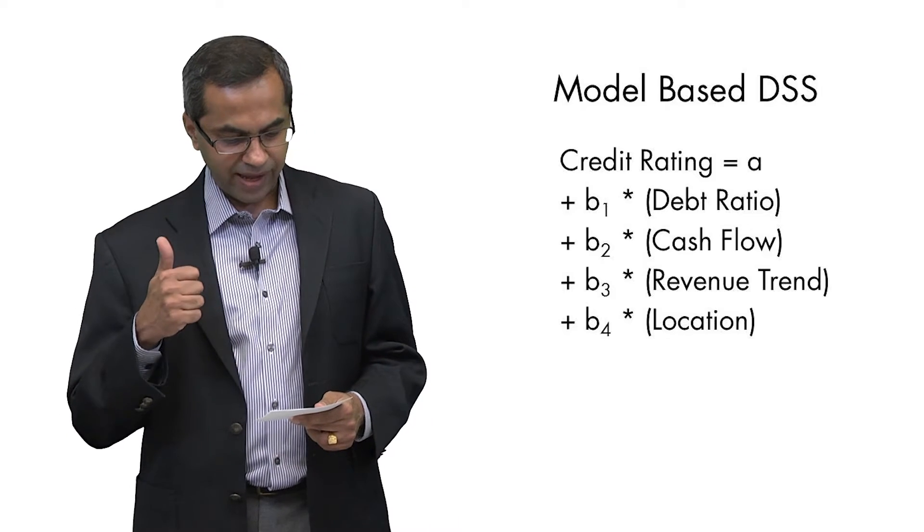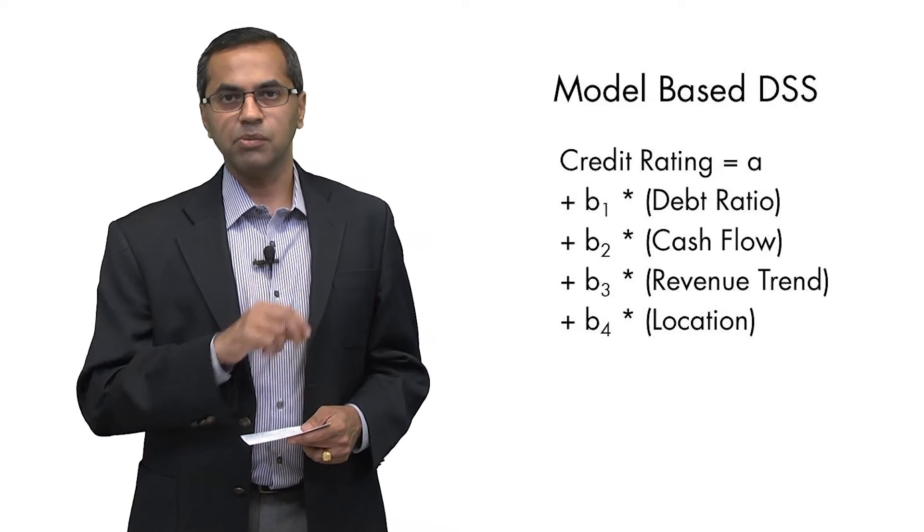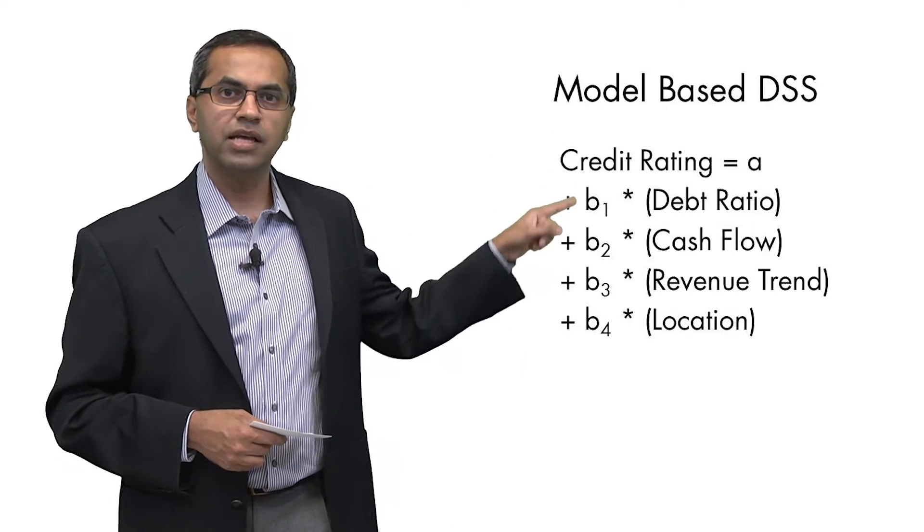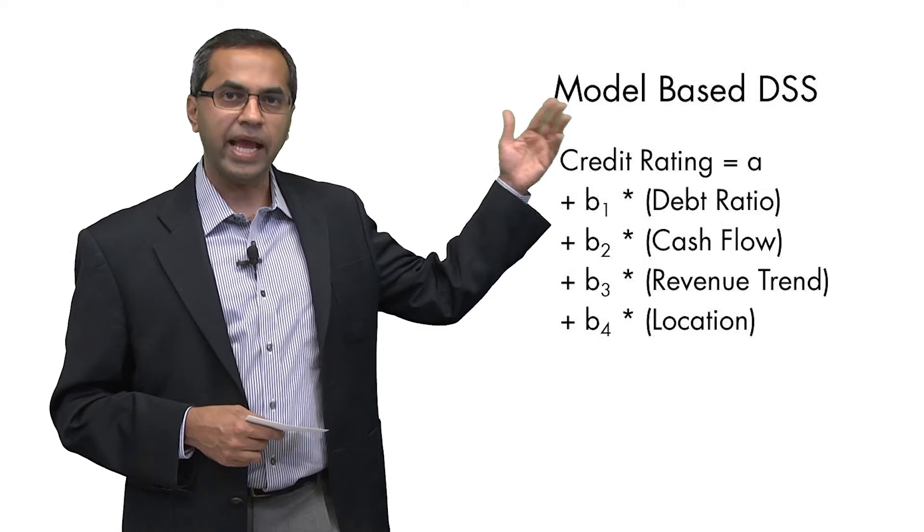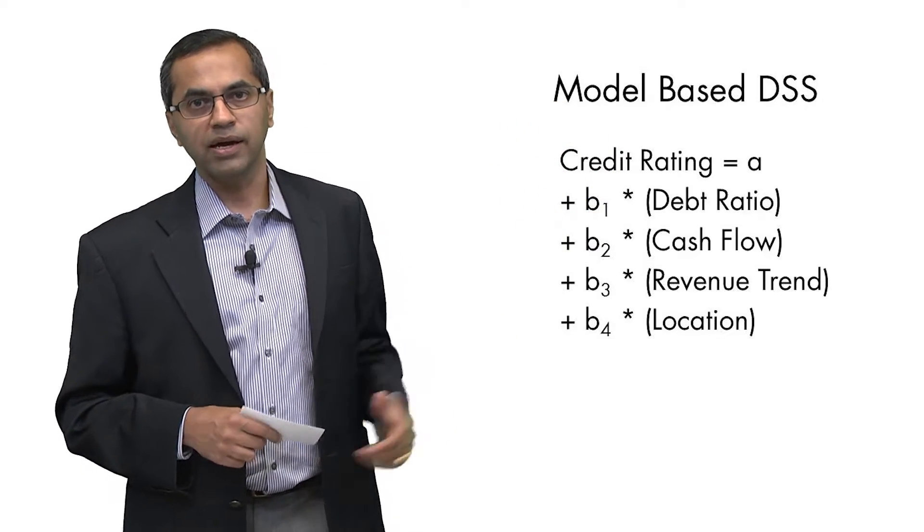The debt ratio, the cash flow, the revenue trend, and the location of this company. And what you might actually end up with is a model that looks like this where the credit rating is some A plus B1 times the debt ratio plus B2 times the cash flow and so on.